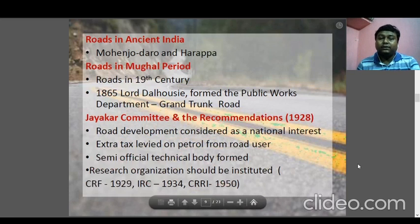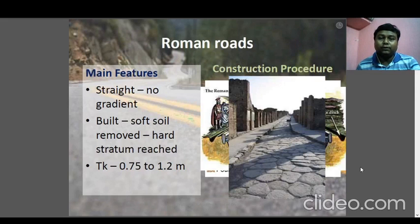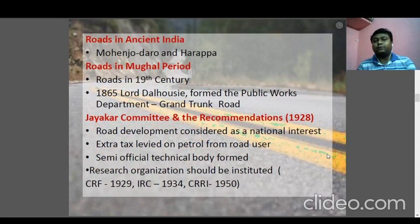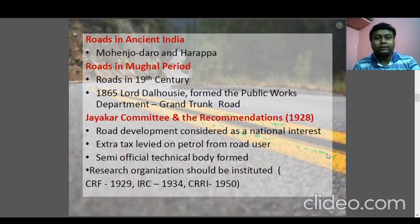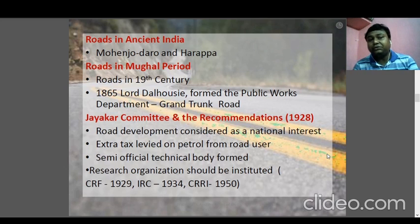Now we look at highway development acts and processes in the Indian scenario. In ancient times, roads existed in Mohenjo-Daro and Harappa using block-type roads. After that, the Mughals conquered India and started road construction. In 1865, Lord Dalhousie formed the Public Works Department (PWD), which still exists today. Each state now has its own PWD and CPWD.